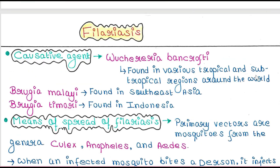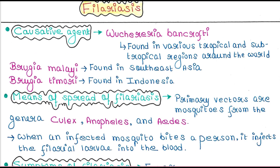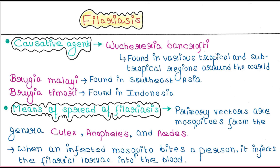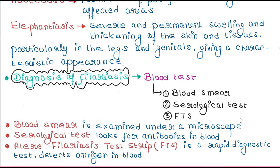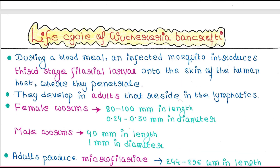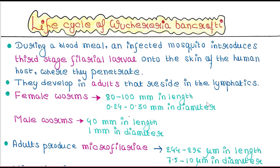In our last lecture, we have seen what is the disease filariasis, and we have seen that Wuchereria bancrofti is the main culprit of this disease. Wuchereria bancrofti is nothing but a nematode, a roundworm. Some mosquitoes are the vectors of this roundworm, and if these mosquitoes are infected by Wuchereria, they will cause filariasis disease. Today we will specifically talk about the life cycle of Wuchereria bancrofti.